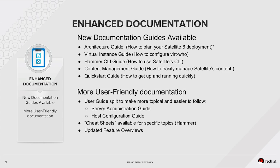One of the other areas where improvements were made in Satellite 6.2 is documentation. We introduced five brand new documentation guides pulling together knowledge that has been in various knowledge base articles. We have a new architecture guide to better plan your Satellite 6 deployment, a virtual instance guide covering virt-who in a satellite use case, the Hammer CLI guide for the CLI for satellite, the content management guide covering content views and importing third-party content, and the quick start guide — a short guide designed to take you from zero to sixty in a satellite deployment.